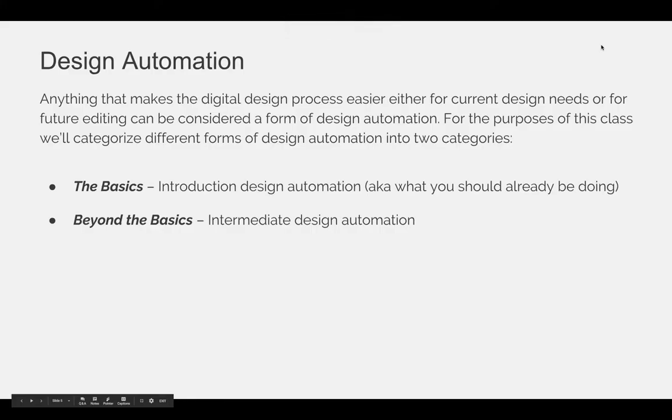Design automation — anything that makes a digital design process easier, either for current design needs or for future editing, can be considered a form of design automation. For the purposes of this class, we'll categorize different forms of design automation into two generalized categories: the basics and beyond the basics.